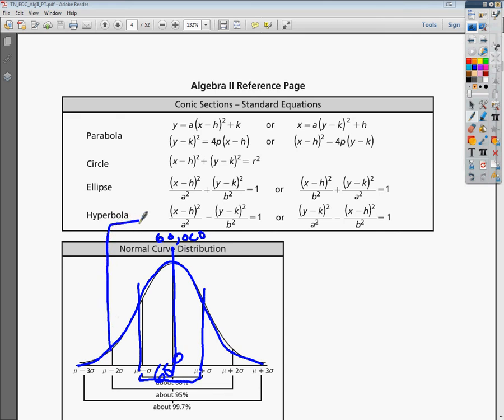The second set, which would be 2 standard deviations above or below, would give you something like 95%. And if we look at the third standard deviation out, we're looking at about 99.7% of all data.